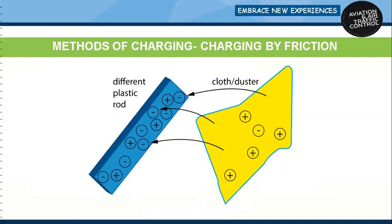Charging by friction: when an object is rubbed over another object, the electrons get transferred from one object to another. This transfer of electrons takes place due to friction between the two objects. The object that transfers electrons loses negative charges, and the object that accepts electrons gains negative charge. Hence, the object that gains extra electrons becomes negatively charged and the object that loses electrons becomes positively charged. Thus the two objects get charged by friction. The charge obtained is called friction charge, and this method is called electrification by friction.